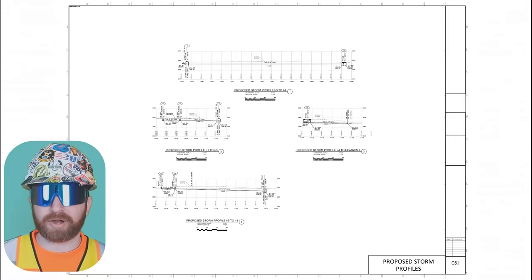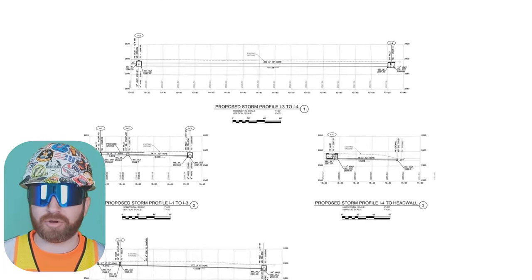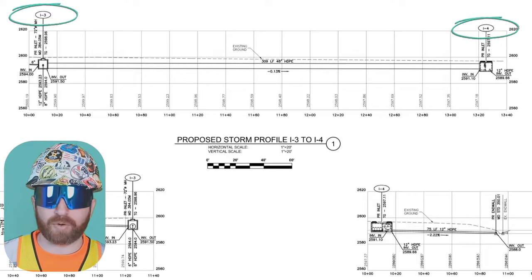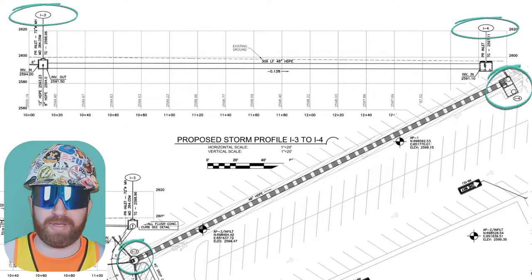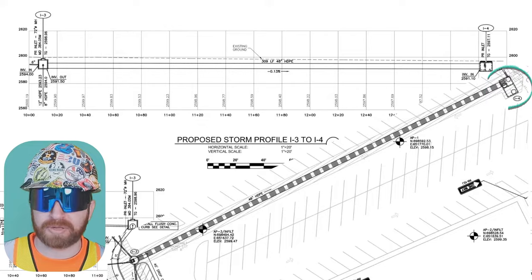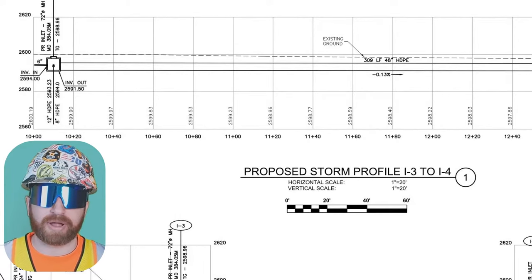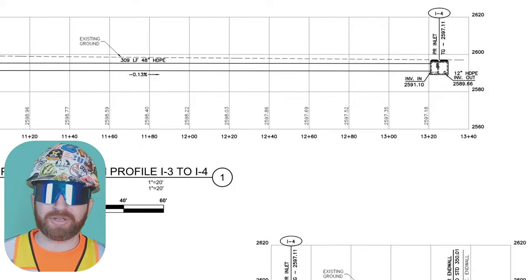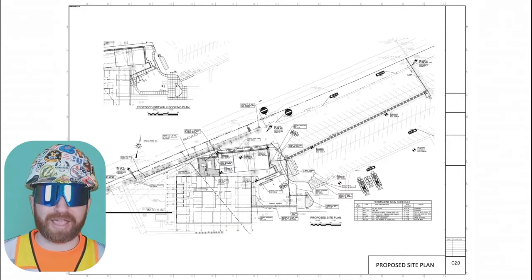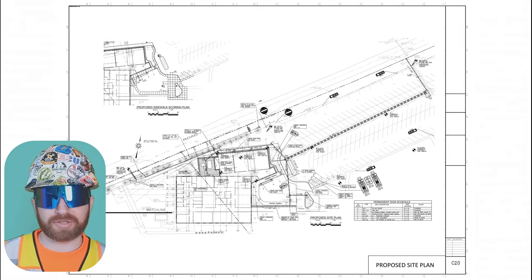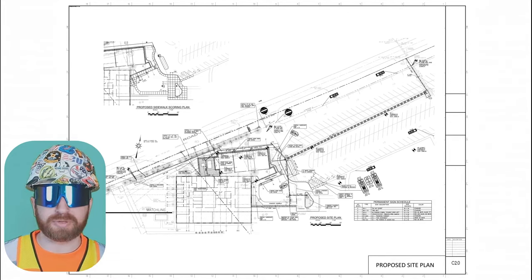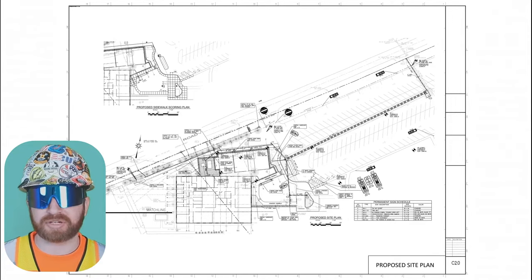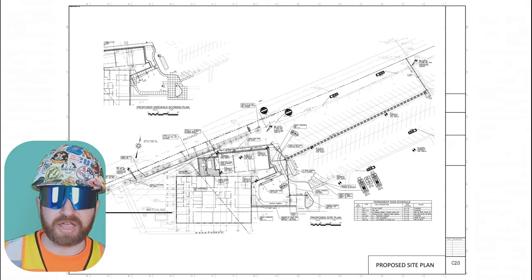The last two pages are profile pages — section cuts showing what we're looking at underground. Structures I3 and I4, which we saw earlier on both the storm inlet and manhole report and the proposed site plan, are shown here with exactly how many linear feet of pipe, what the inverts are, all in relation to existing ground elevations. This job had limited asphalt paving in the civil set. We focused mainly on the storm system, but remember there are also water lines, gas lines, and sanitary lines — and there will be specific details for all of those depending on the project.